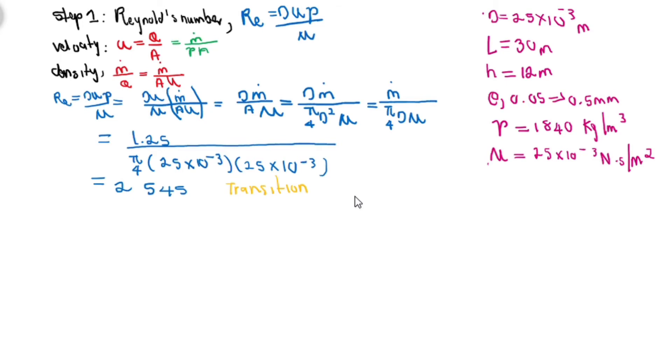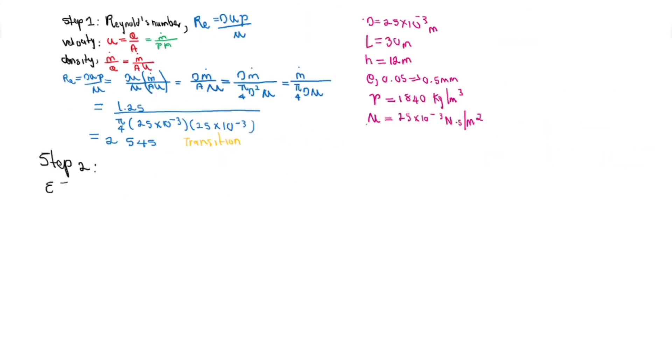Step 2 will be to calculate the relative roughness. We are given the roughness between 0.05 millimeter and 0.5 millimeter. In order to calculate the friction factors, we first have to calculate the ratio between the roughness and diameter. I'm going to calculate it at these two ranges: 0.002 and 0.02. Of course, it's unitless because the units will cancel out.